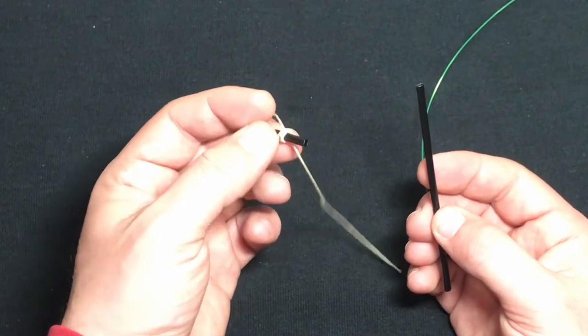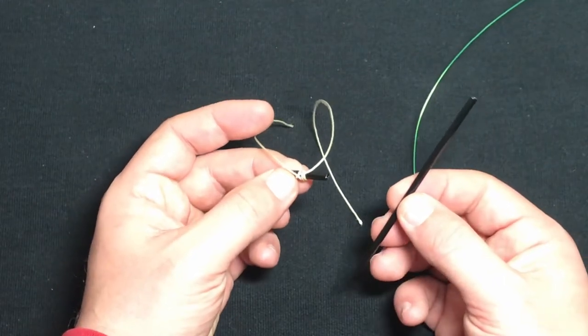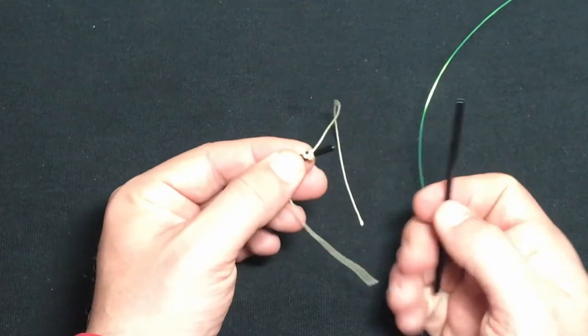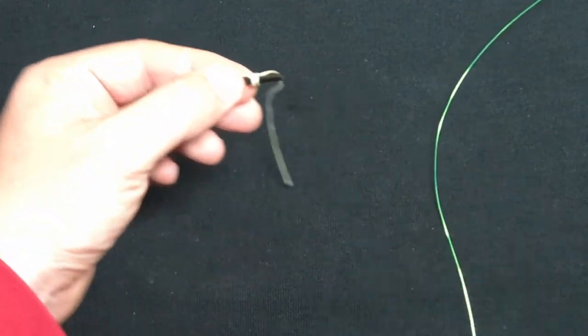But you can probably make these super cheap. Just get a thing of coffee stirrers and some line and tie these things around the coffee stirrer, clip off a section of it and have a bunch of these in your tackle box.